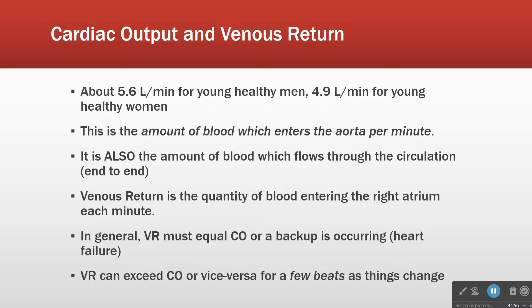The cardiac output is the amount of blood which enters the aorta per minute. You might ask, what about the right-sided circulation? It should also be the amount of blood that enters the pulmonary artery. The right side and left side should be pumping about the same amount of blood each time, otherwise you have heart failure.